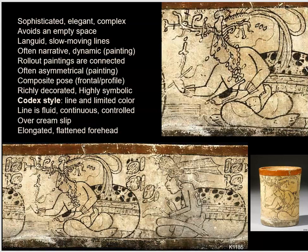These images are very richly decorated and highly symbolic. In order to recognize the maize god, you have to recognize the necklace, the headdress, and know that the maize god was a patron of scribes who could act as a scribe himself. This is generally referred to as codex style, because it looks a lot like a page from the codex — filled with line and very limited color, with fluid, continuous, controlled line work over a cream slip.